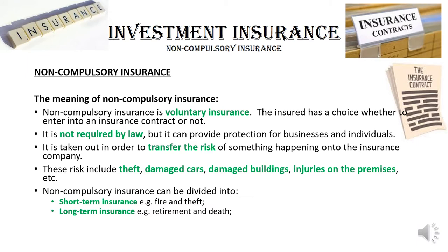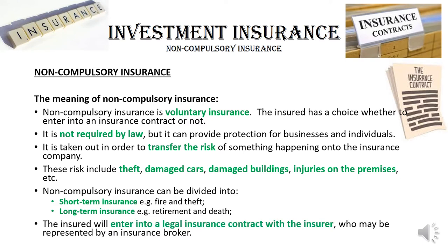Non-compulsory insurance is divided into two groups: short-term insurance and long-term insurance. Short-term insurance is basically taking out insurance on assets — your car, your factory, your stock — protecting them against things like fire and theft. Long-term insurance is about insuring people: the life of people or making provision for retirement. The insured will enter into a legal insurance contract with the insurer, who might be represented by an insurance broker — somebody qualified who works at the company and signs the contract on its behalf.